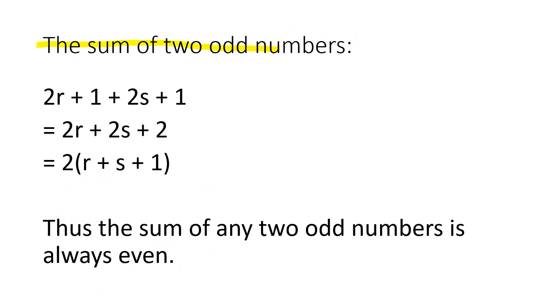The sum of the two odd numbers, that is 2R plus 1 plus 2S plus 1, simplifying it you will get 2 multiplied by the whole of R plus S plus 1. Thus, we can say that the sum of any two odd numbers is always even because it is divisible by 2.